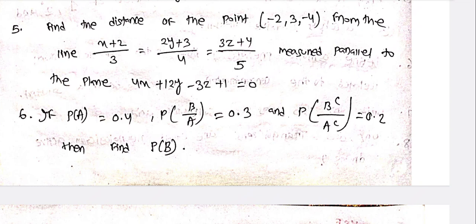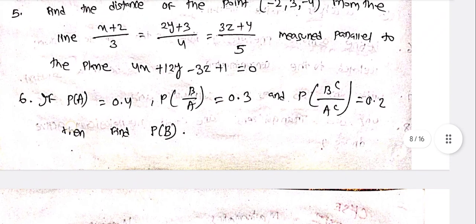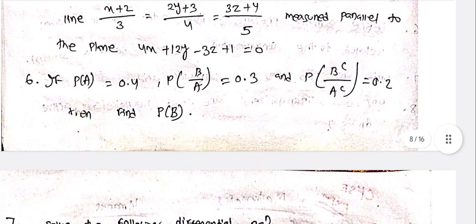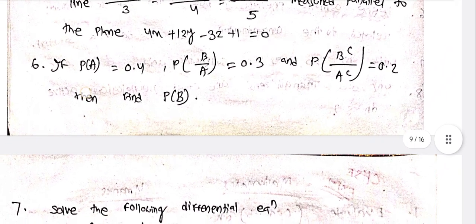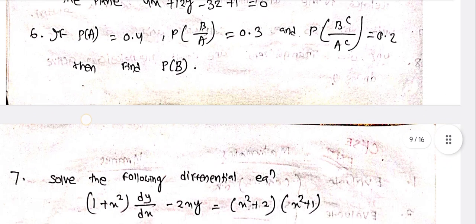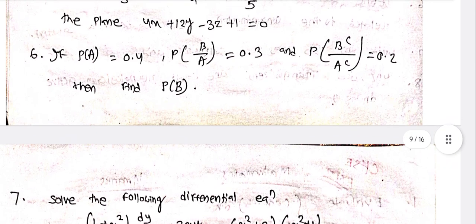Find the plane parallel to the given plane 4x + 12y - 3z + 1 = 0. Probability problem: P(A) = 0.4,